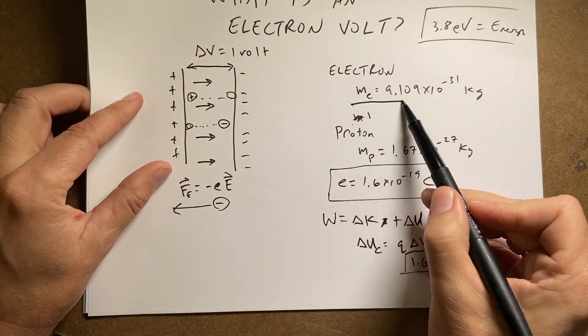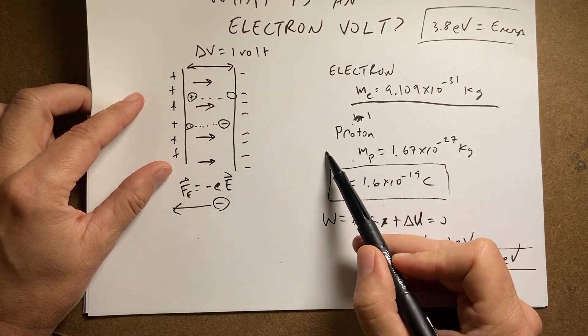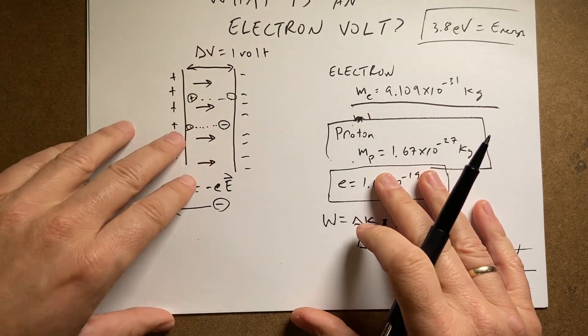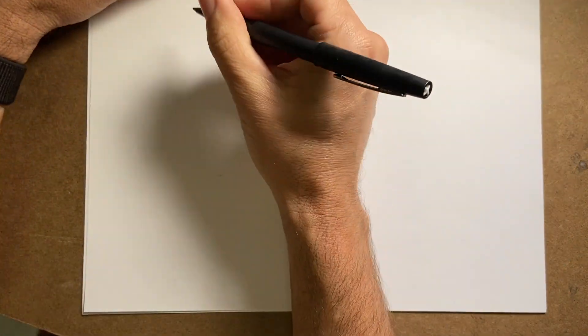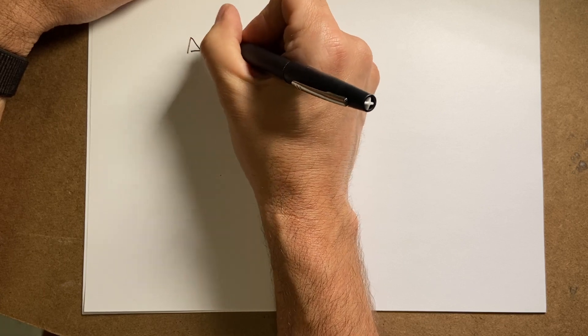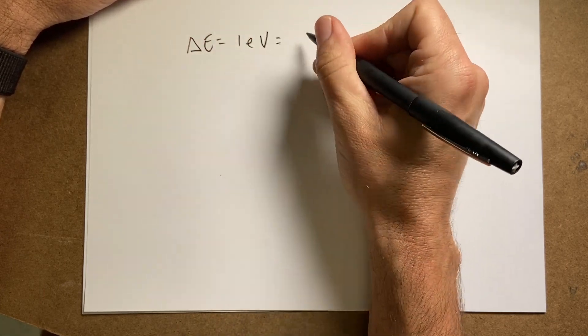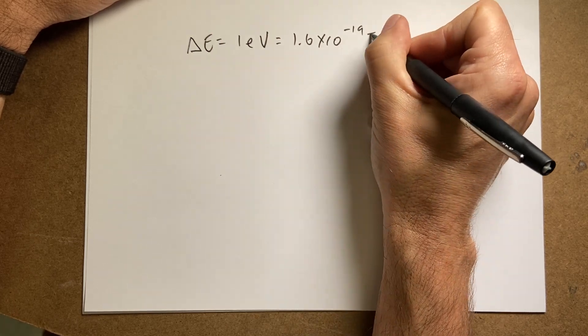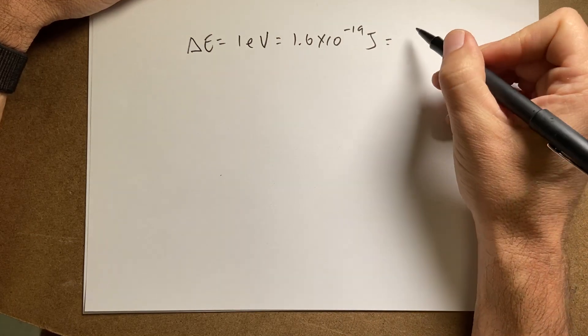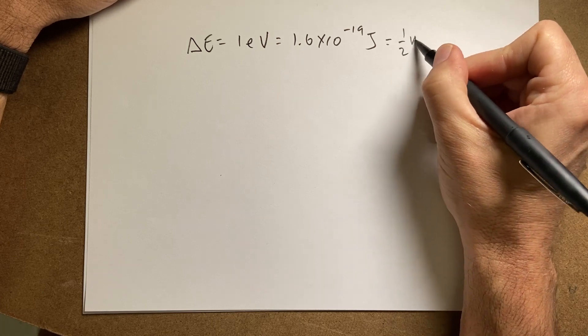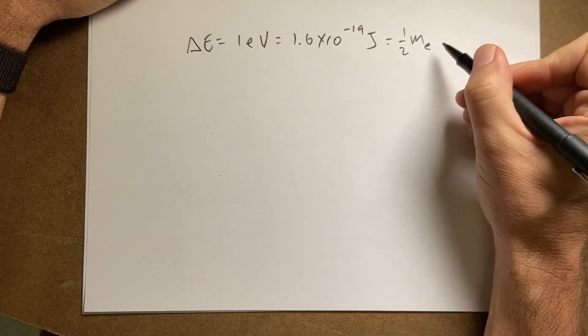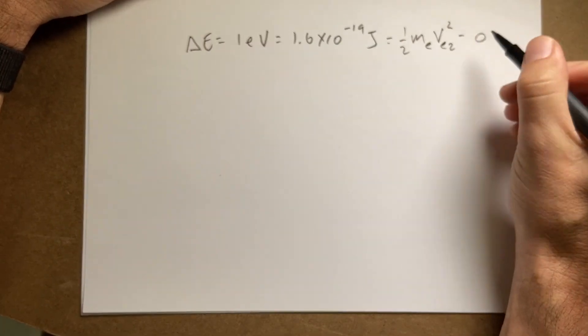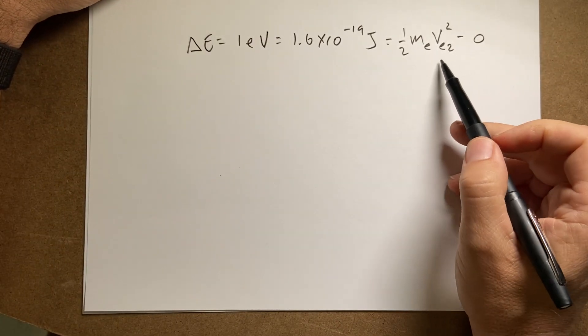Because I have the mass of the proton, that's the mass of the electron, and the mass of the proton right there. So let's say that they both have a change in energy of one electron volt, which is 1.6 times 10 to the negative 19th joules. And that would be the change in kinetic energy, which is one half mEVe squared minus zero. Because let's say it starts from rest.